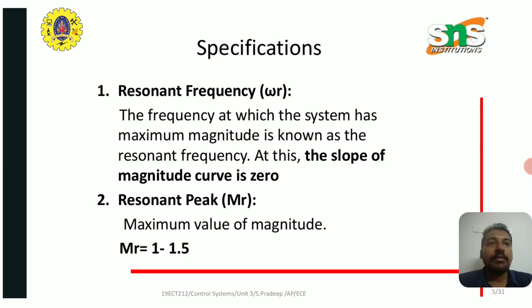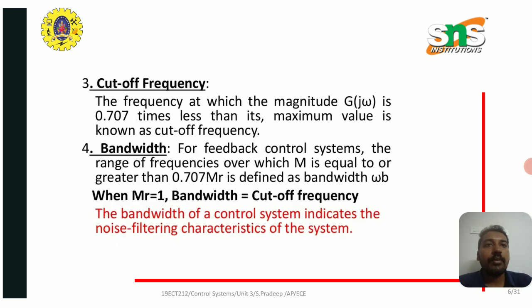Resonant frequency (ωr) is the frequency at which the system has maximum magnitude; at this point the slope of the magnitude curve is zero. Resonant peak is the maximum value of magnitude, which is typically between 1 and 1.5. Cutoff frequency is the frequency at which the magnitude |G(jω)| is 0.707 times less than its maximum.